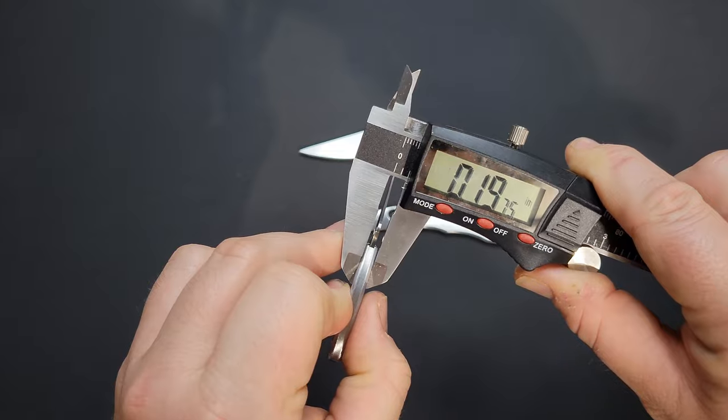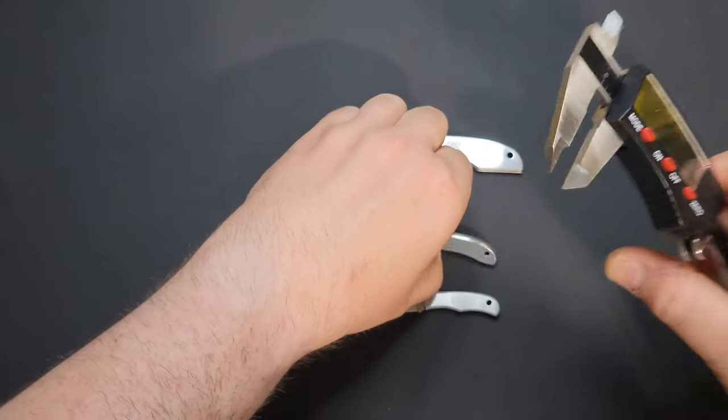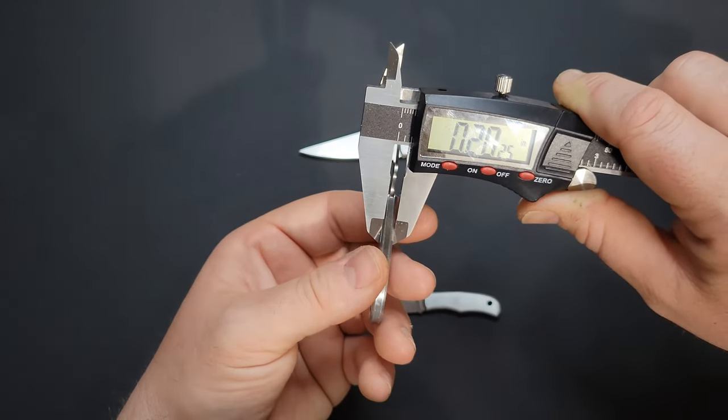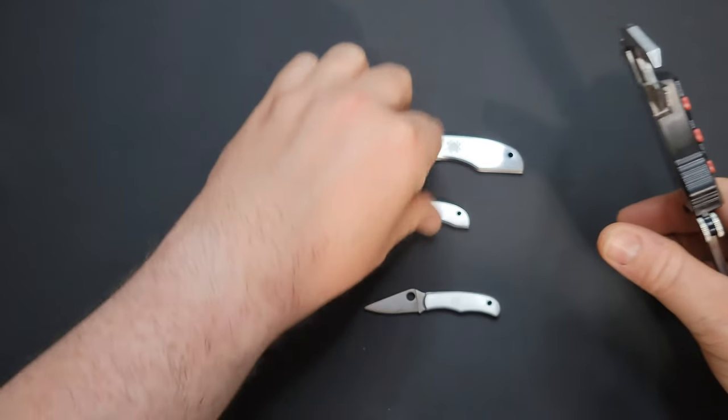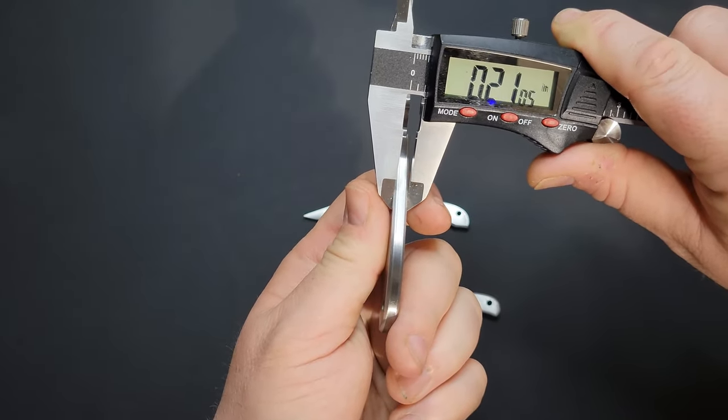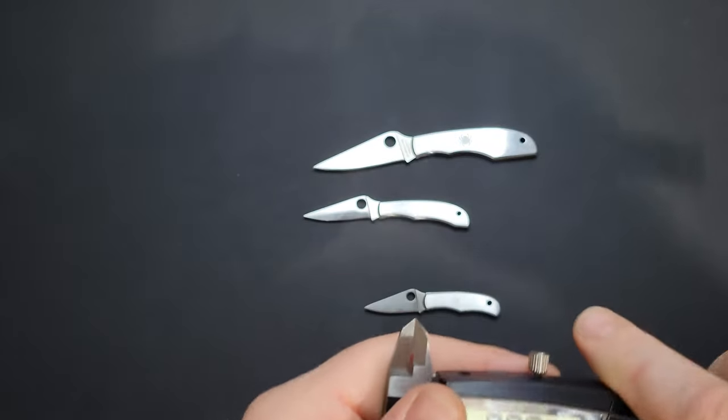Handle width - point one nine on the bug, on the honeybee point two oh, and on the grasshopper point two one. Grasshopper the thickest, but they're all still pretty small, pretty thin.